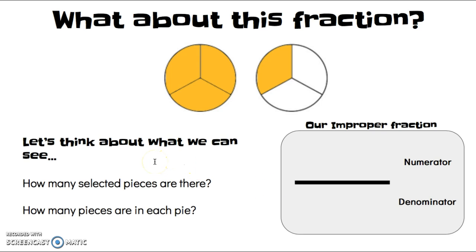The first thing we can talk about is how many selected pieces there are. So, if we look at this, we see that there are 1, 2, 3, 4 selected pieces. So, that would mean that our numerator would have to be 4.